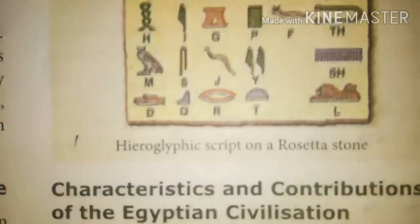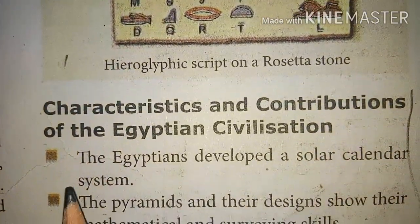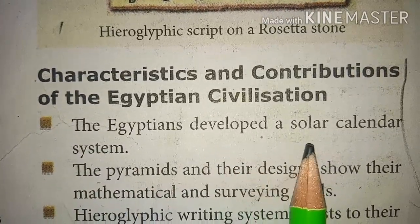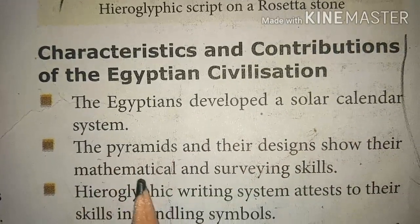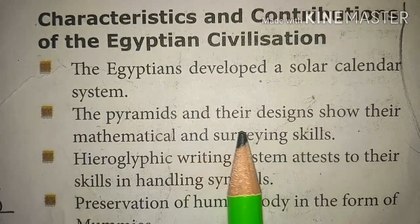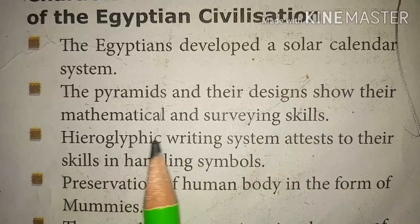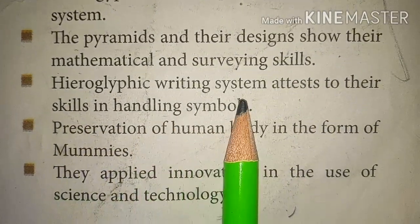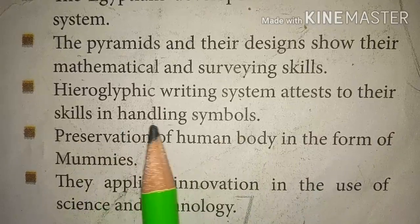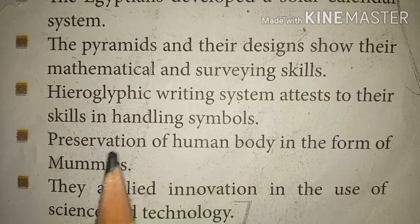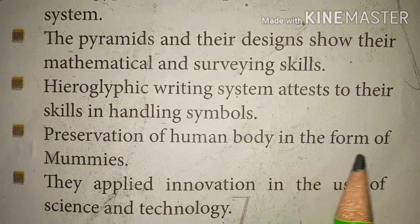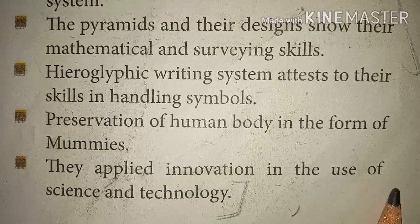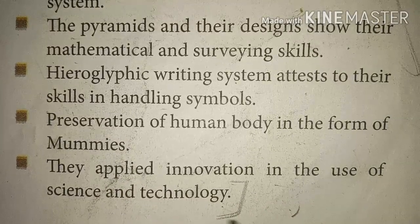Characteristics and contributions of the Egyptian civilization: The Egyptians developed a solar calendar system. The pyramids and their designs show their mathematical and surveying skills. The hieroglyphic writing system attests to their skills in handling symbols. Preservation of the human body in the form of mummies is another key contribution. They applied innovation in the use of science and technology.